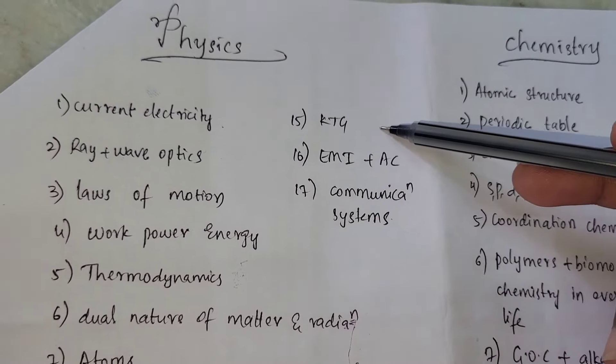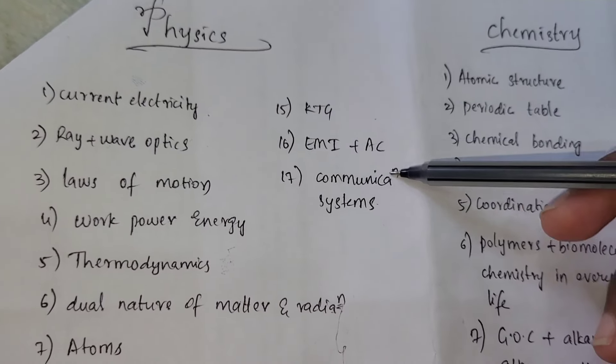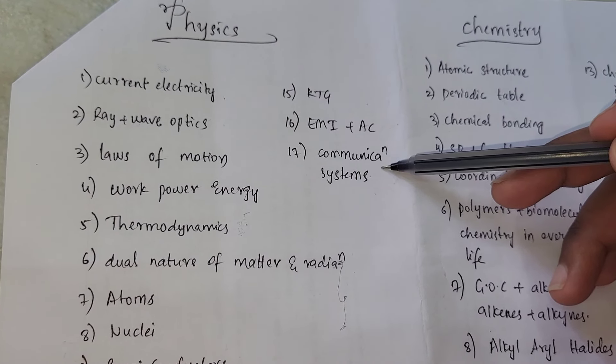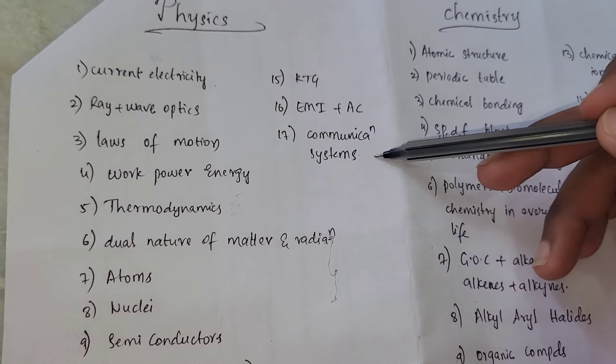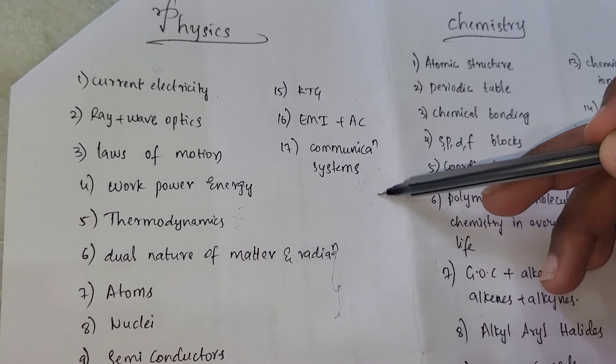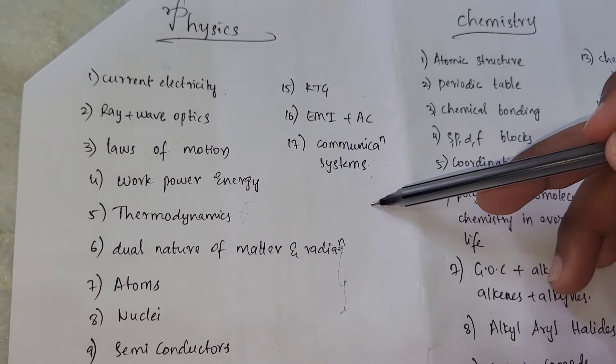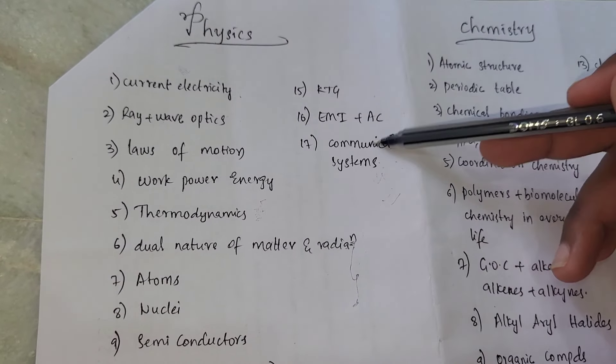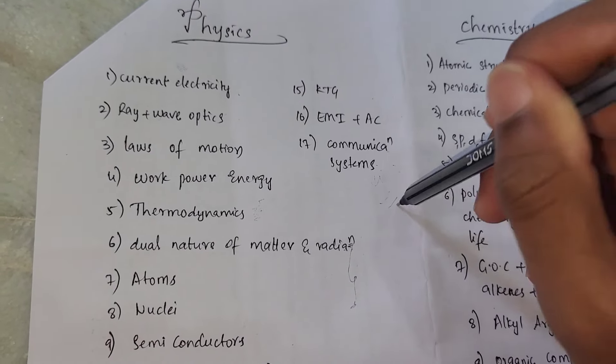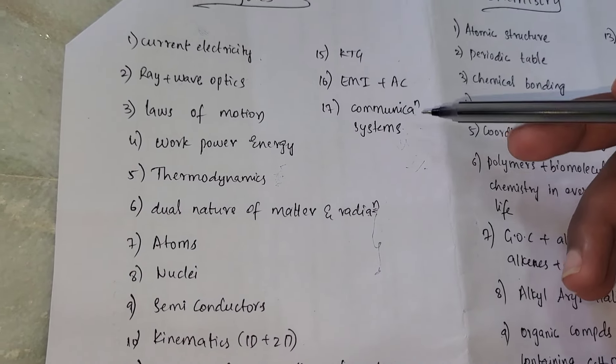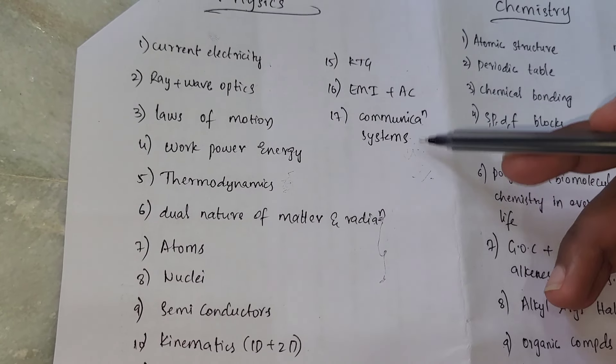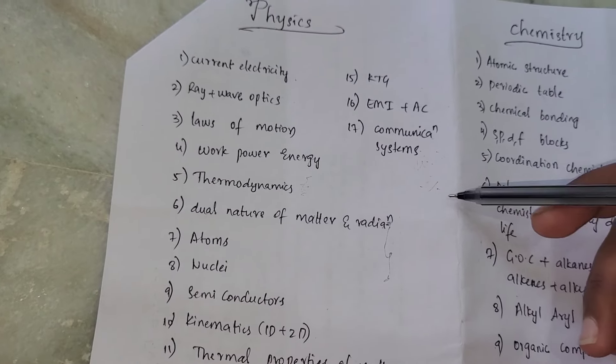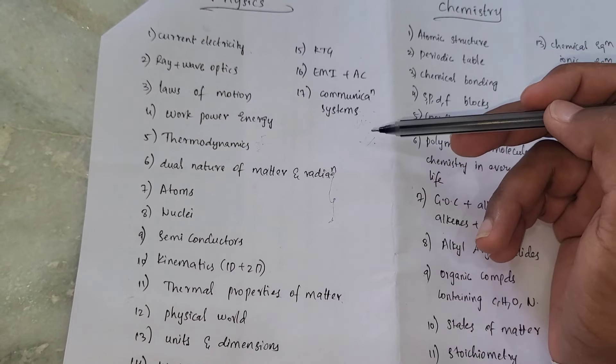Next, thermal properties of matter. Physical world, units and dimensions - if you have principle of homogeneity, easier. Waves and oscillations - easier. Next, KTG. Next, EMIAC - a lot of formulas. Communication system - at least 20 marks, that will be enough. If physics is strong, prepare at least 20 marks - prepare these chapters. In advanced, we have to focus on it.